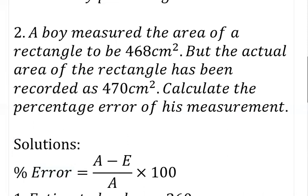Question number two: a boy measured the area of a rectangle to be 468 centimeters squared, but the actual area of the rectangle has been recorded as 470 centimeters squared. Calculate the percentage error of his measurements. Having an error in the measurement can be as a result of a whole lot of things — the instrument, lack of concentration, or whatsoever. So let's get the percentage error of the measurement of this boy.